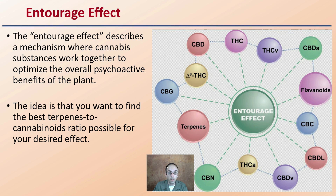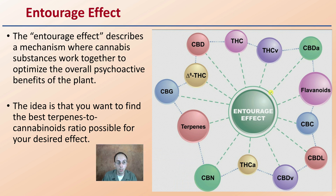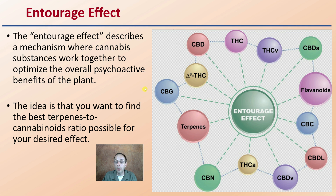This brings us to the entourage effect, which has its own dedicated video on this channel. In general, the entourage effect describes a mechanism where cannabis substances work together to optimize the overall psychoactive benefits of the plant. The idea is to find the best terpene-to-cannabinoid ratio for your desired effect, as there is a web of interactions — not just one linear chain — and understanding those interactions can create a more beneficial medicinal outcome.